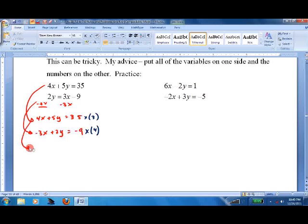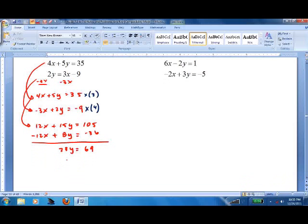When we do that, we get 12x plus 15y equals 105. This one we get negative 12x plus 8y equals negative 36. I know we did it right because the x is going to cancel. 23y equals 69. Divide both sides by 23. Y equals 3. Seems like it took us a long time to get there.